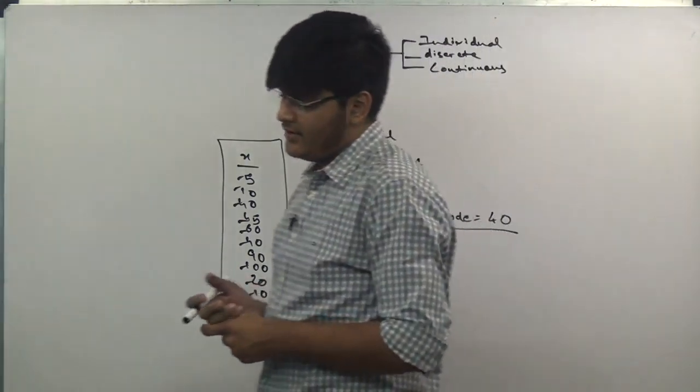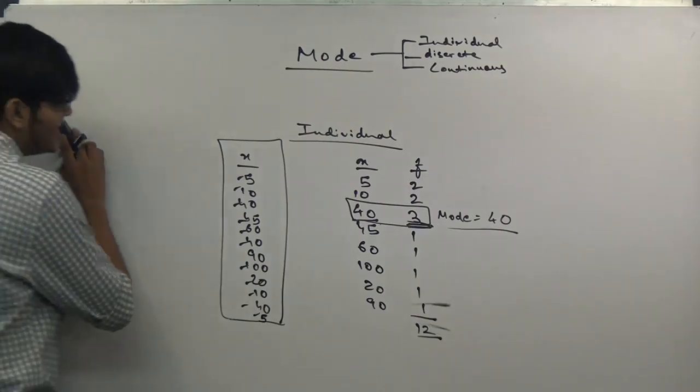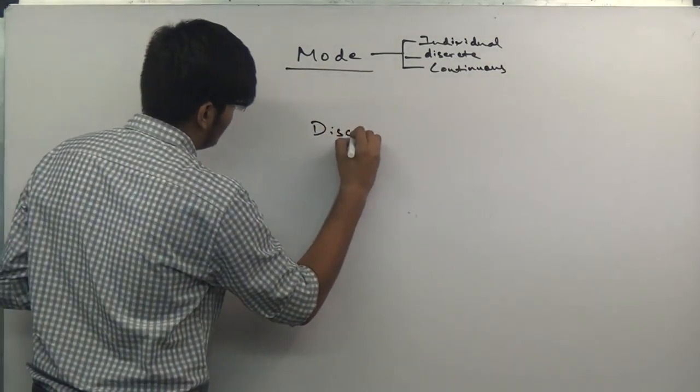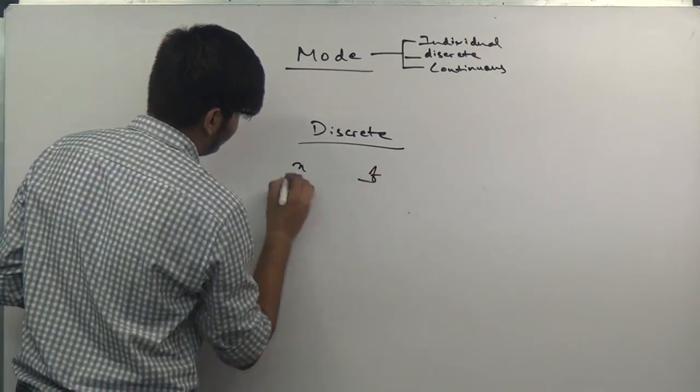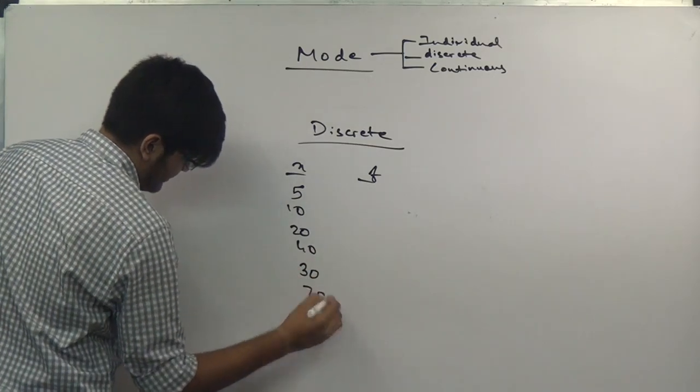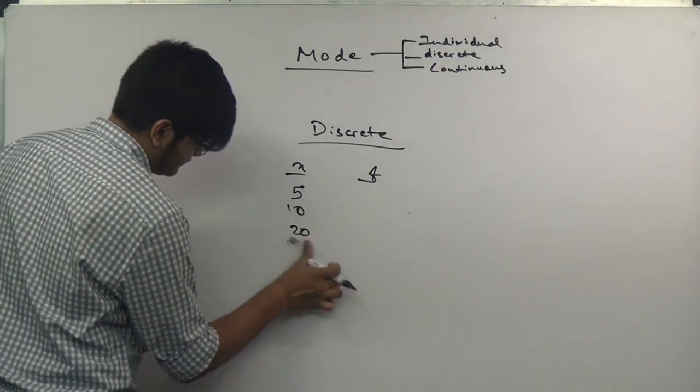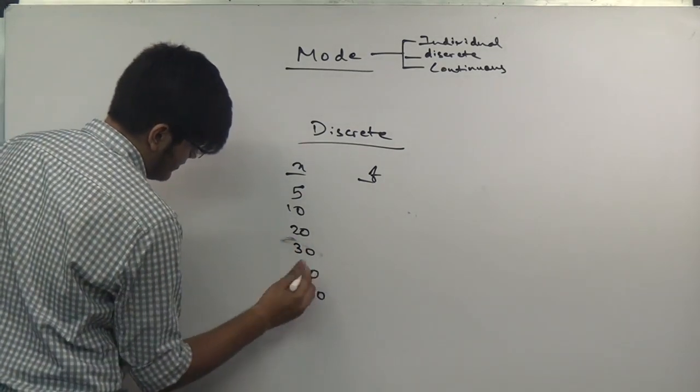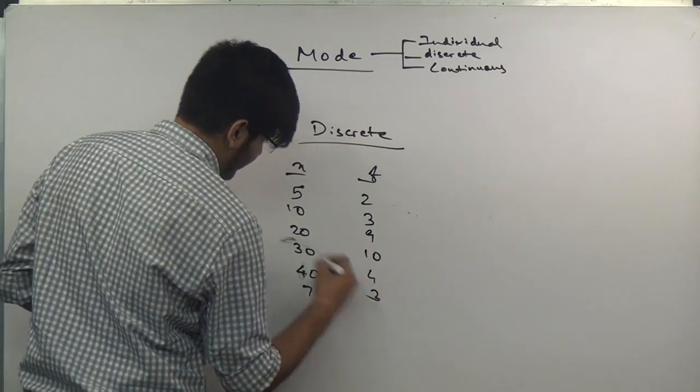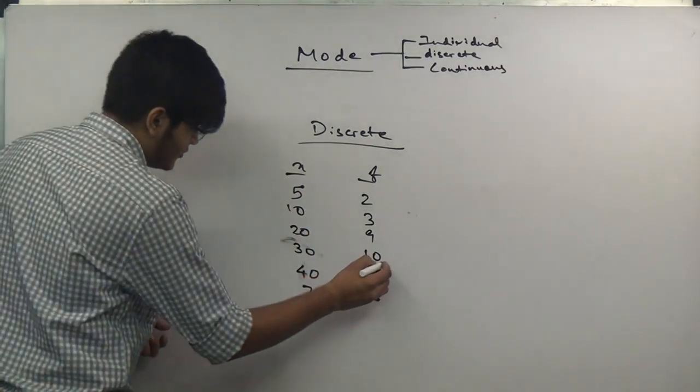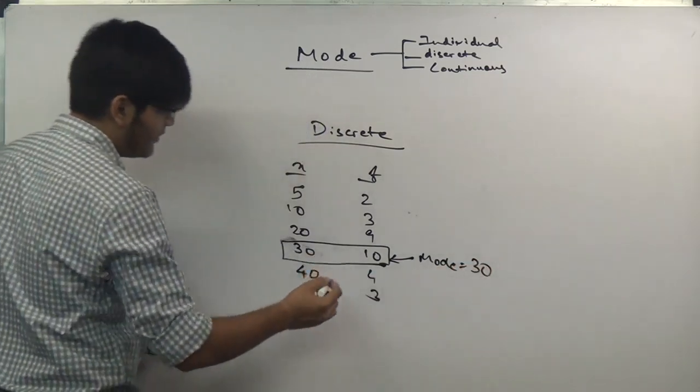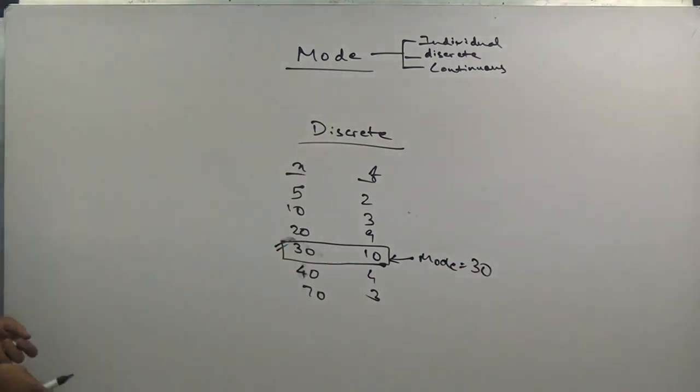Next we start off with discrete series. Discrete series is also very easy. x and f are given: 5, 10, 20, 40, 30, 70, and frequencies are 2, 3, 10, 9, 10, 43. The highest frequency is 43 which belongs to 30, so the mode is 30. Remember the frequency is not the mode, the class relating to it is.